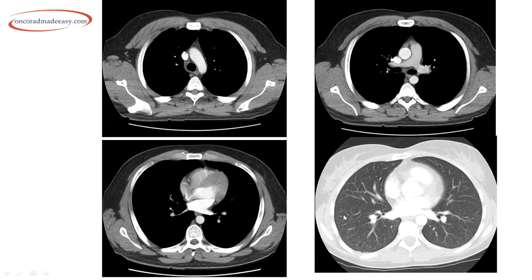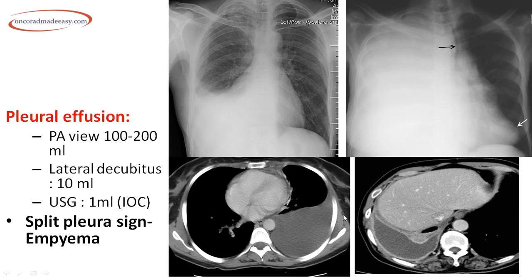On a PA view, at least 100 to 200 ml of fluid is required to be visible. On lateral decubitus view it can detect up to 10 ml of fluid. The investigation of choice for pleural effusion is ultrasound chest, which can detect up to 1 ml of pleural effusion. A typical X-ray of pleural effusion shows blunting of the right CP angle with rising fluid levels.